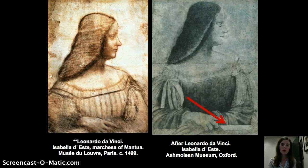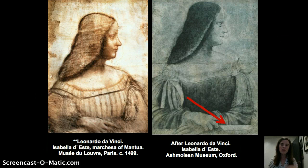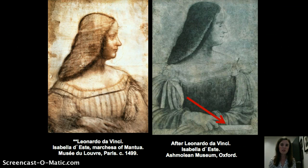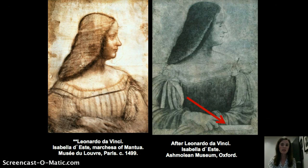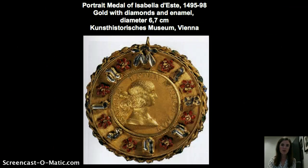The original cartoon would have had a lower portion that has been cropped off, and it would have had Isabella pointing to a book. It's nice to see this version after Leonardo where we actually can see Isabella pointing to a book, indicating how she not only wanted to be seen as beautiful and fashionable, but also learned. Although she did complain that she didn't necessarily understand Latin all that well, she clearly was interested in literature and wanted to show it off in her artworks.